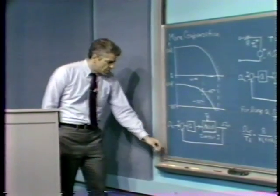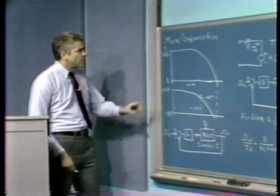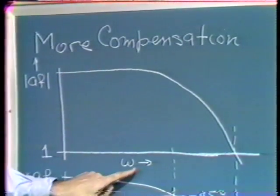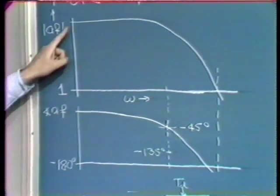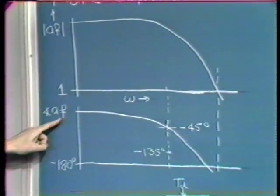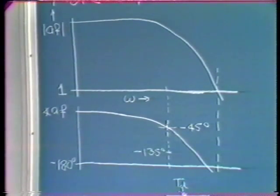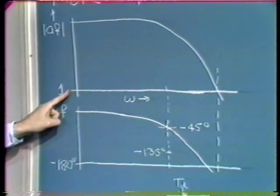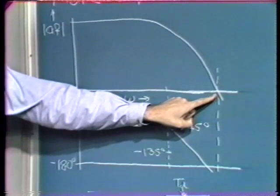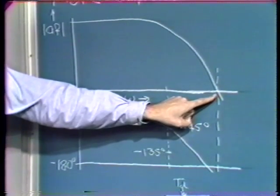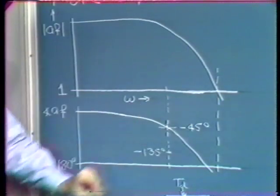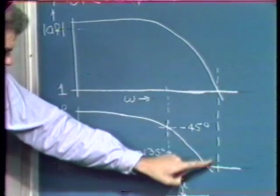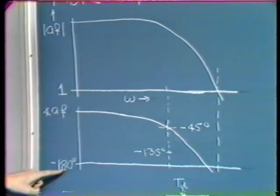Suppose we start with a system that has a Bode plot as shown. Here's the A₀F₀ product as a function of frequency — the magnitude and the angle in our usual Bode plot coordinates. As drawn, the system is actually unstable. This is the unity magnitude point, so this is the crossover frequency, and by that frequency the angle of the AF product has gone through minus 180 degrees. Consequently, this is a system that's unstable as shown.